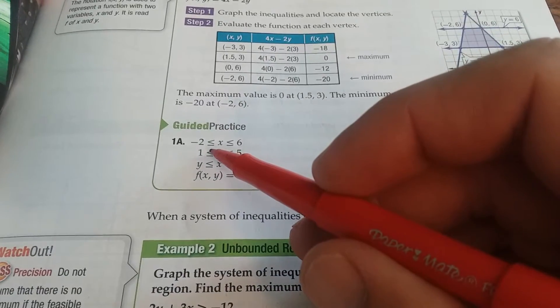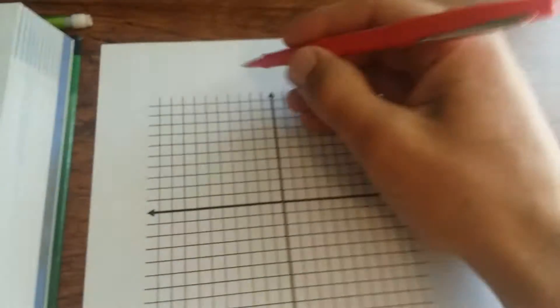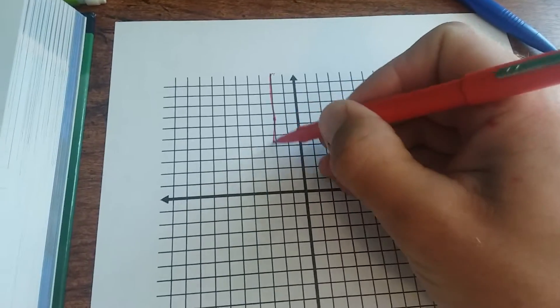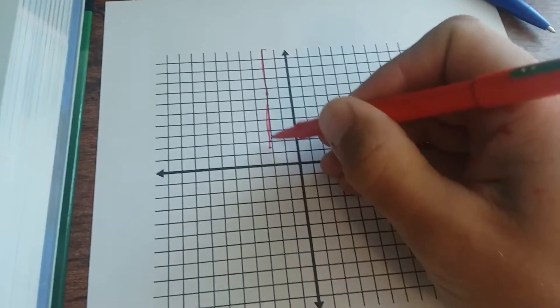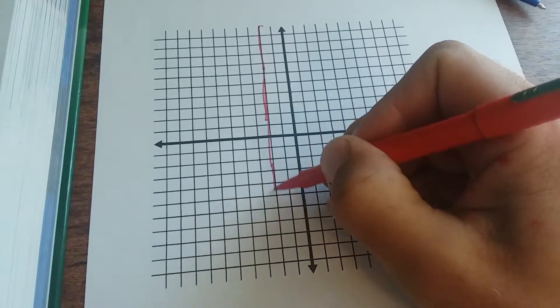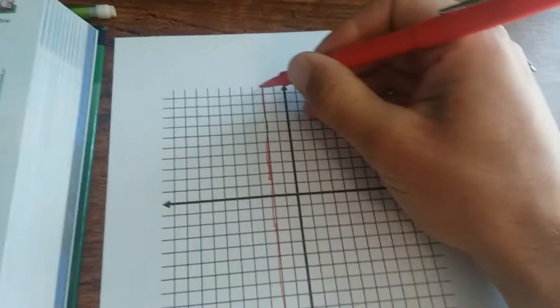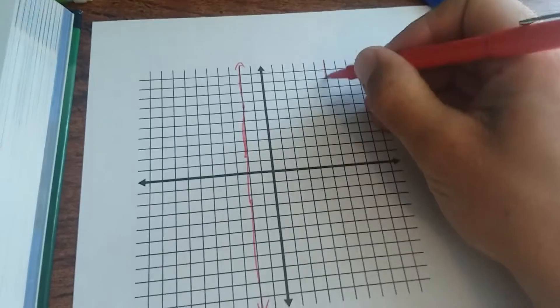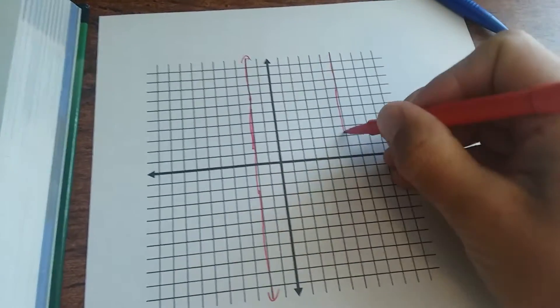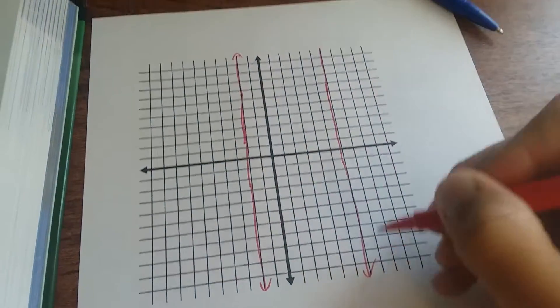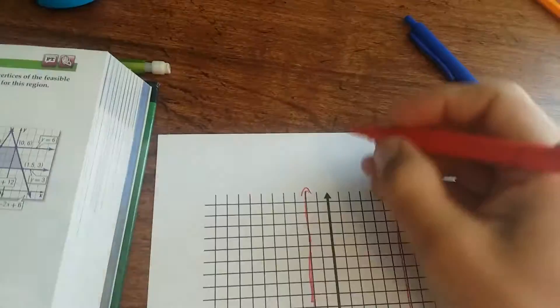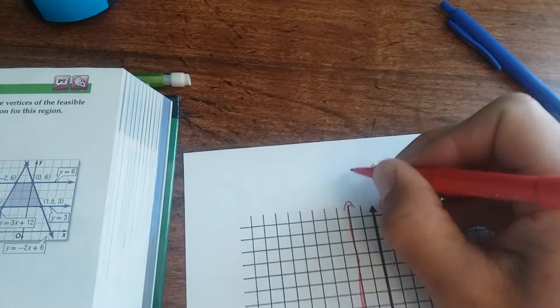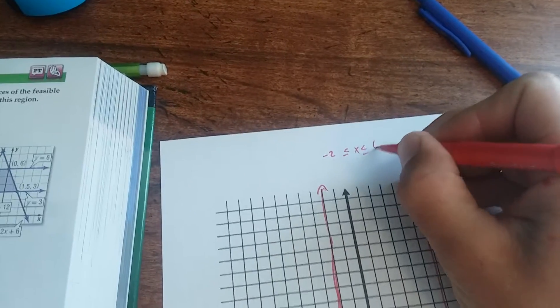So first of all, graph axes between negative 2 and 6, that is the vertical lines. Negative 2 is right here, and then 6: 1, 2, 3, 4, 5, 6. So these two vertical lines represent x is between negative 2 and 6.